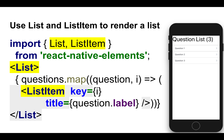What we'd like to do is use List and ListItem components from React Native Elements. We can iterate over the list items using map, get the question ID and use it as a key, and use the label of the question as the content of the list item.